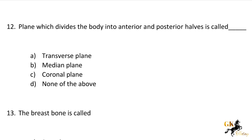Next question: The plane which divides the body into anterior and posterior halves is called — Option A: Transverse plane. Option B: Median plane. Option C: Coronal plane. Option D: None of the above.